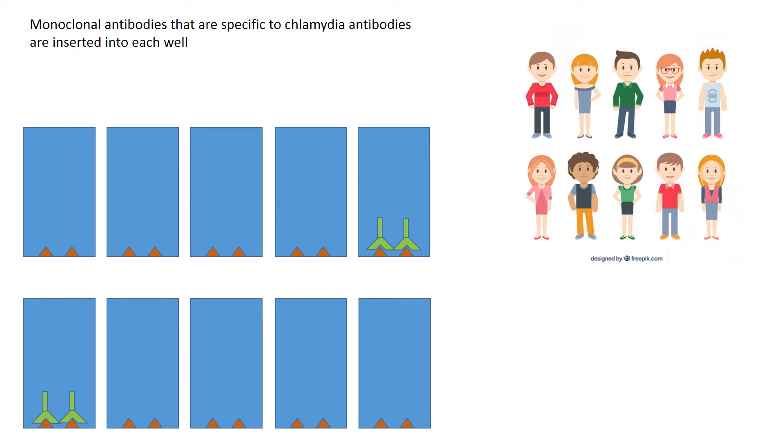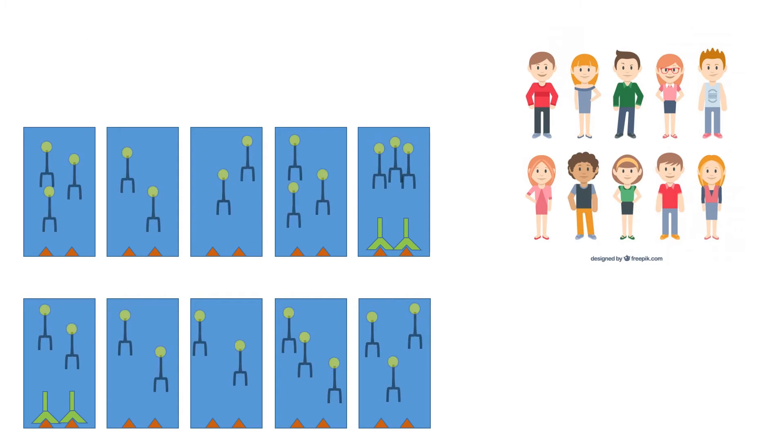Monoclonal antibodies, or a solution of monoclonal antibodies raised against chlamydia antibodies, are inserted into each of these wells. These monoclonal antibodies in their production have been modified slightly. They may have an enzyme attached to them, or a dye, or a fluorescent tag, or even a radioactive tag, all of which can be detected later on.